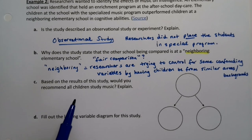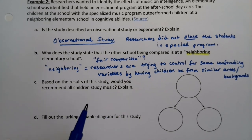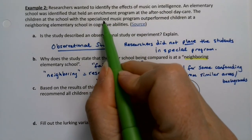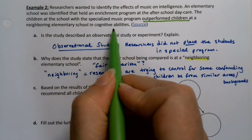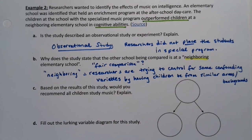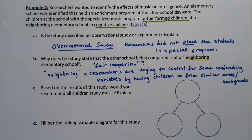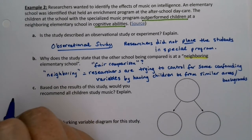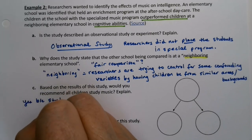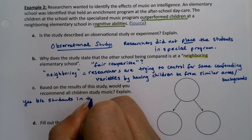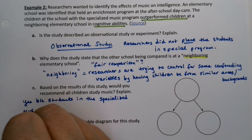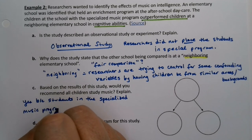Based on the results of the study, would you recommend all children study music? Well, it did say that children in that school with the specialized music program outperformed children at a neighboring elementary school in cognitive abilities — like an IQ test or something like that. So hypothetically speaking, based on the information, you would say yes: students in the specialized music program outperformed similar children.